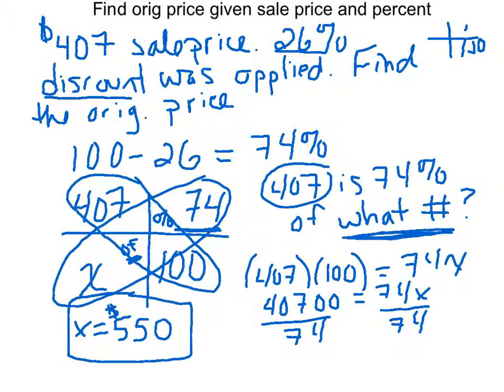All right, let's try another one. Let's say for this one we managed to buy a camera for $268.80.